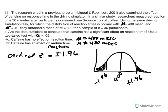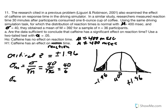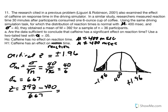First we need our standard error: standard error equals standard deviation over the square root of n. Standard deviation equals 40 and n equals 36, so we get 40 divided by 6. Our standard error equals 6.67. Now we calculate our z value: z equals 392 minus 400 over 6.67. Doing our calculation, 392 minus 400 divided by 6.67, we get a z score equal to negative 1.20.